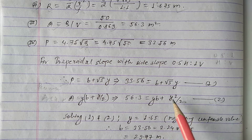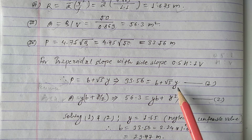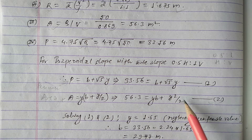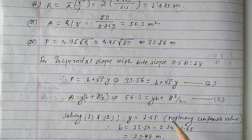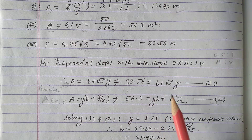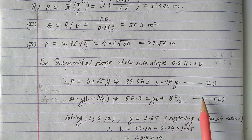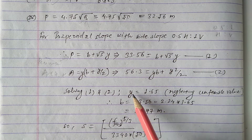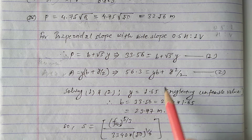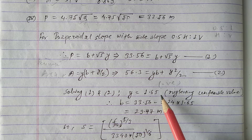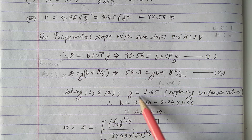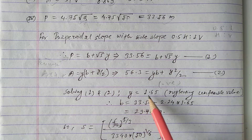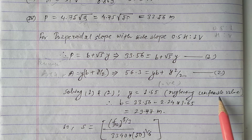The only unknowns are B and y. Equation 1 has y, and Equation 2 has y² — we solve these two simultaneous equations to find y. After solving, we get y = 1.65 m (positive root). We also get a negative root, but we take only the physically feasible positive value, so y = 1.65 m.